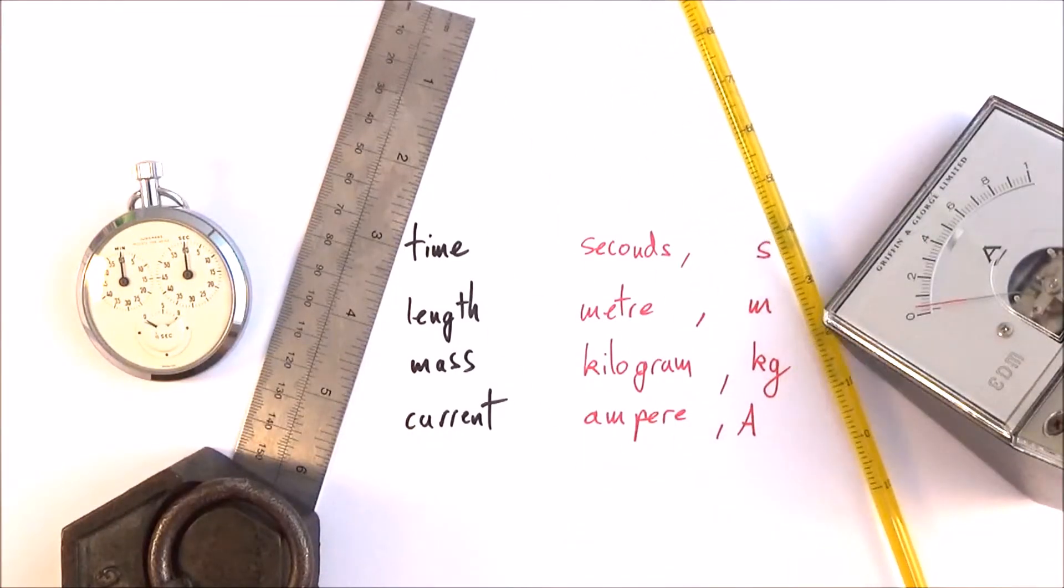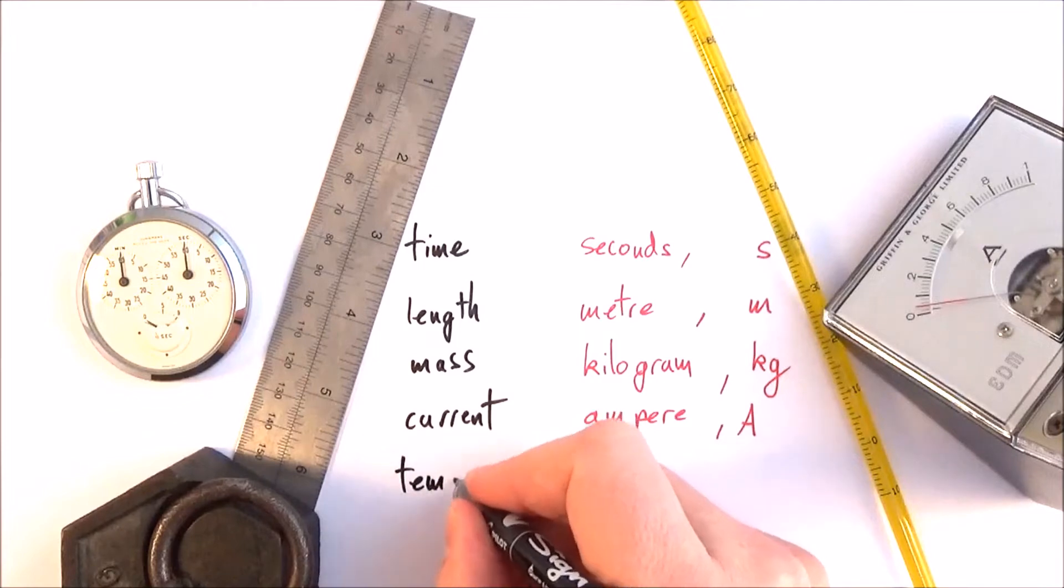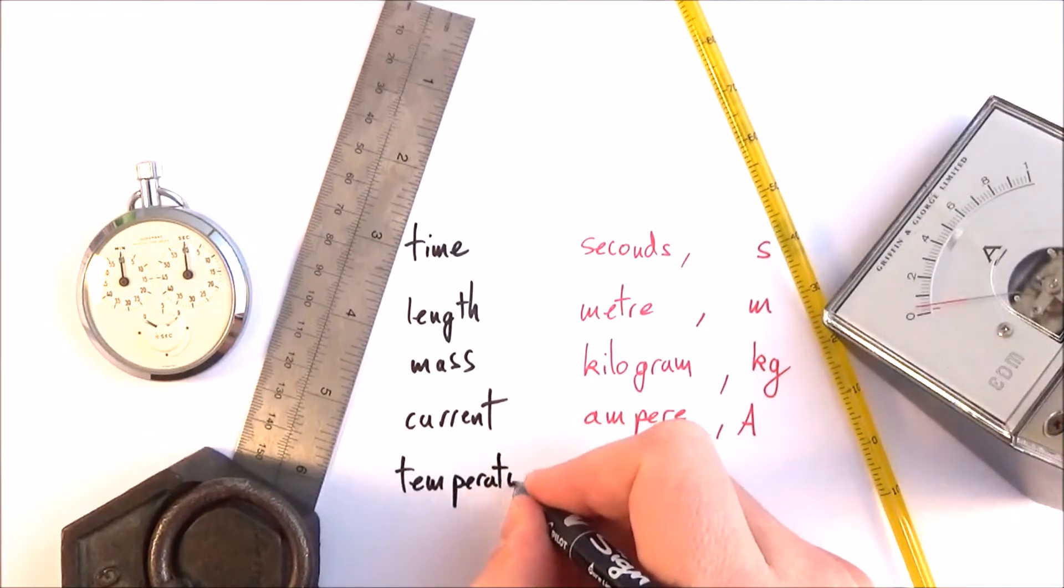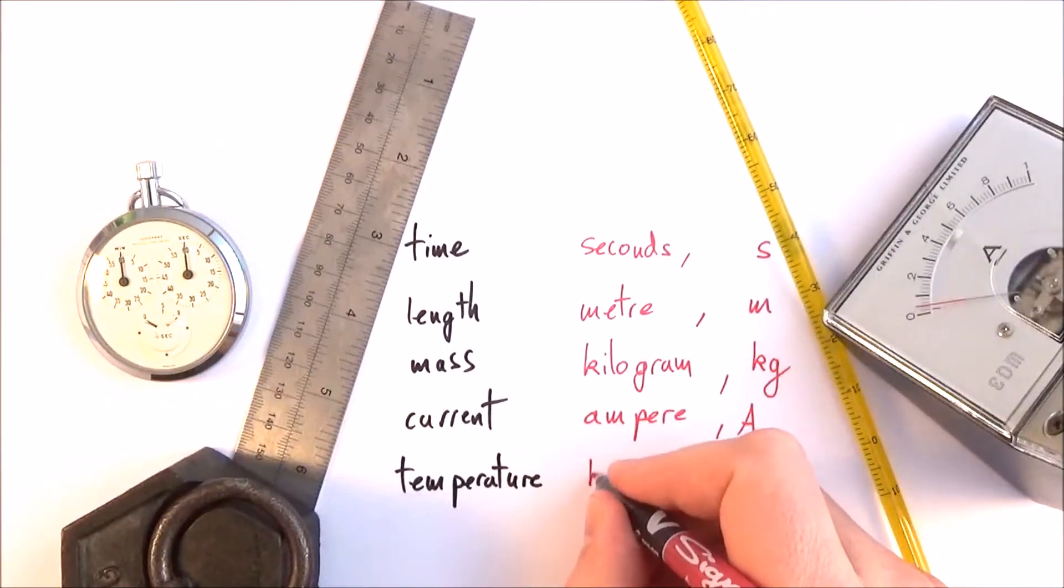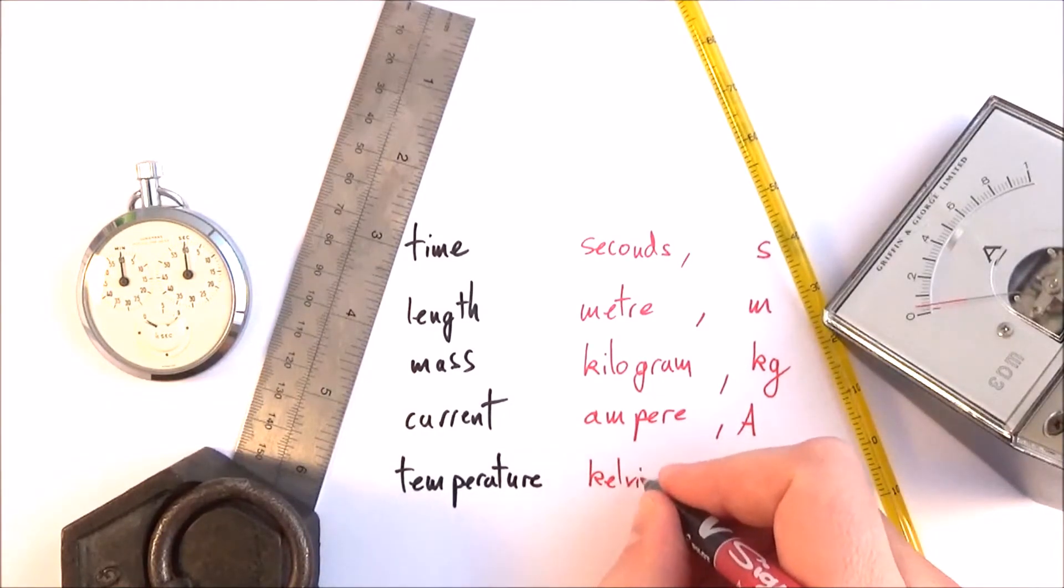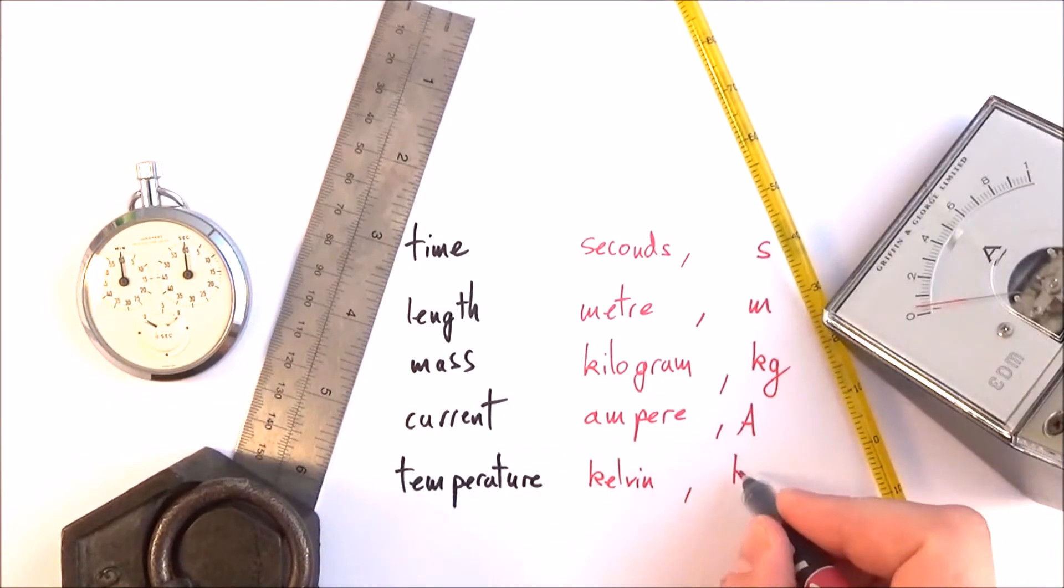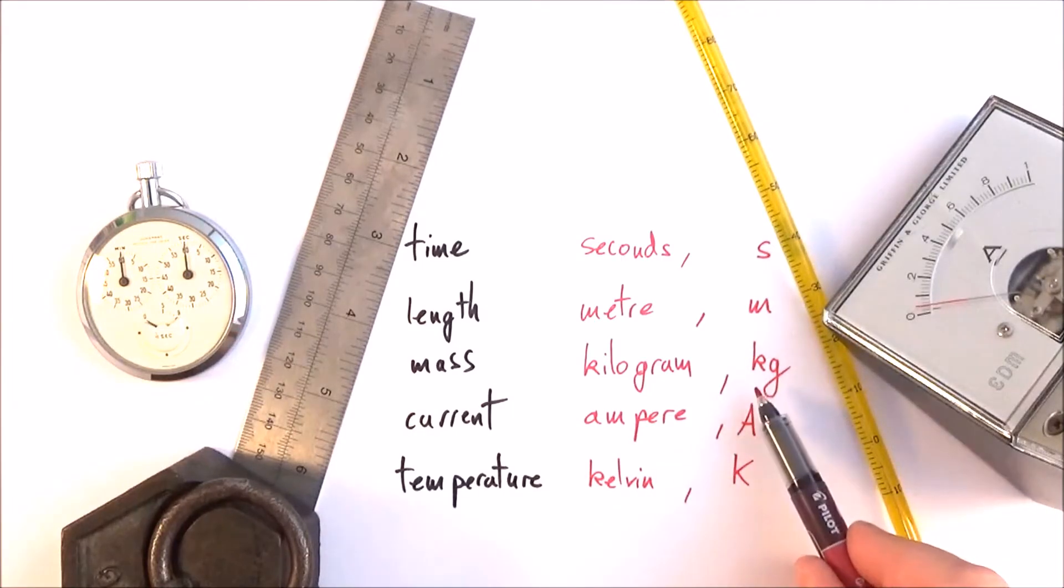Temperature is measured in Kelvin, which we didn't really study at GCSE. Kelvin is used because it goes down to absolute zero. Kelvin is capital K, whereas we had a small k for kilogram.